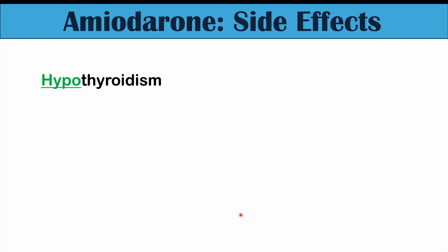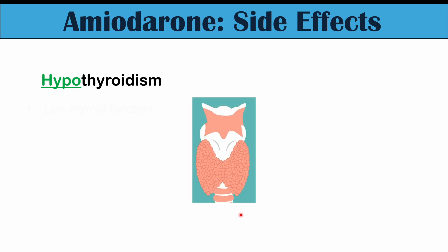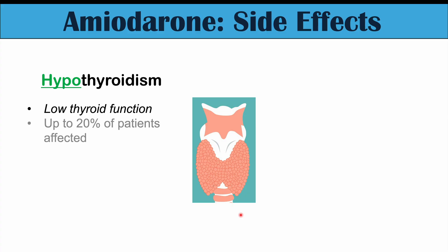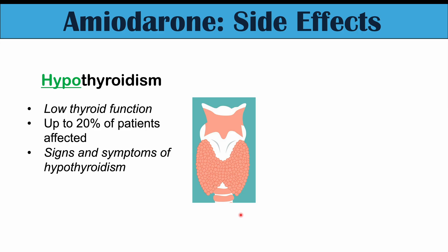We can also see issues with the thyroid gland in patients taking amiodarone. These include hypothyroidism — low thyroid functioning with low thyroid hormone levels — occurring in up to 20% of patients. Signs and symptoms include feeling cold, weight gain, and feeling very fatigued, which is another reason patients can feel fatigued. For more information, please check out the full lesson on the signs and symptoms of hypothyroidism.